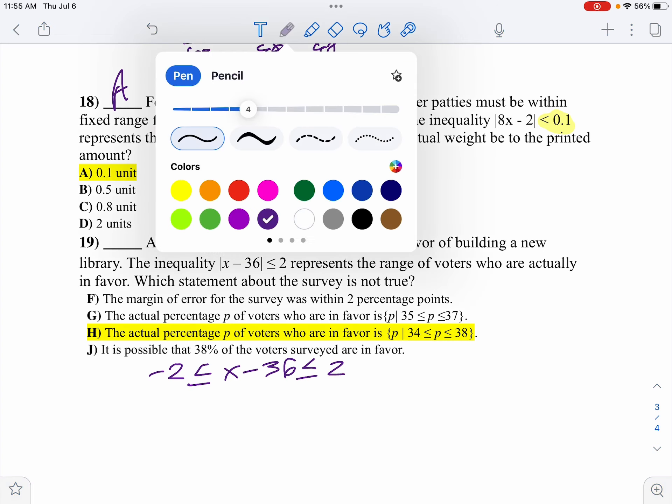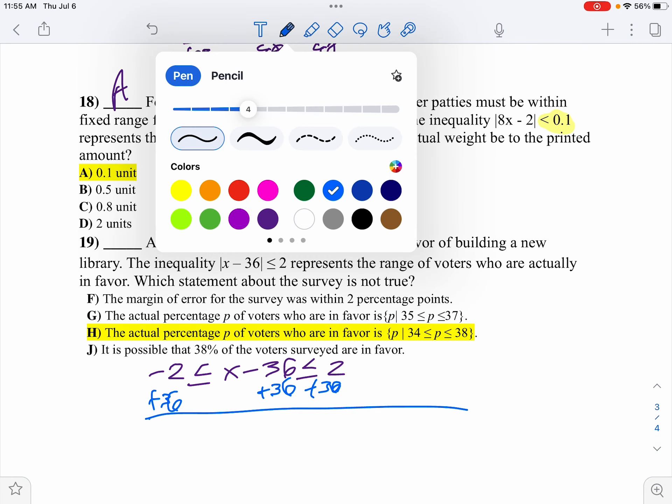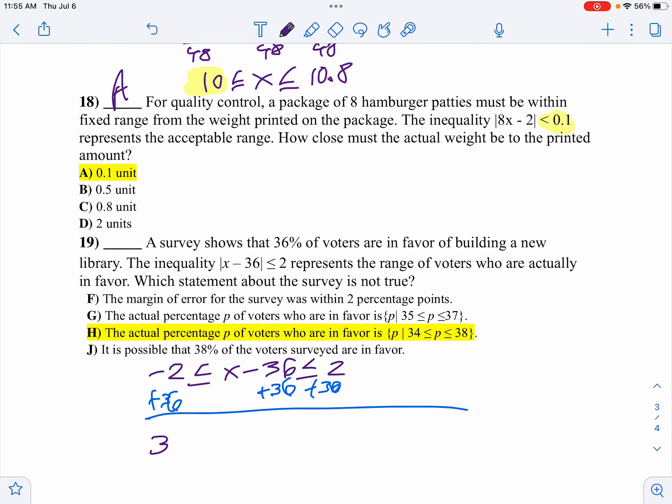So we'll add 36 to the middle, to the right, and to the left. So then I'll get 34 is less than or equal to X, which is less than or equal to 38, and that choice is H.